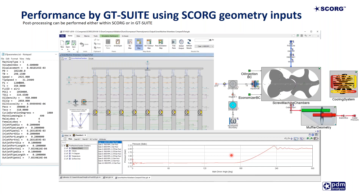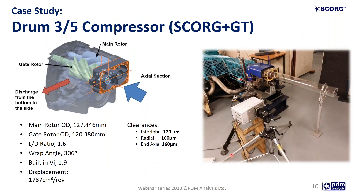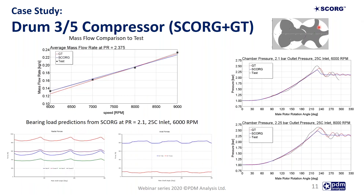I will hand it now to Alex to talk about examples of calculation of these machines using SCORG and GT Suite. The first case study was performed on an oil-free screw compressor with a 3+5 configuration of rotor lobes and N rotor profile, using both SCORG thermodynamics and GT Suite. The compressor was measured in the laboratory of City University of London.